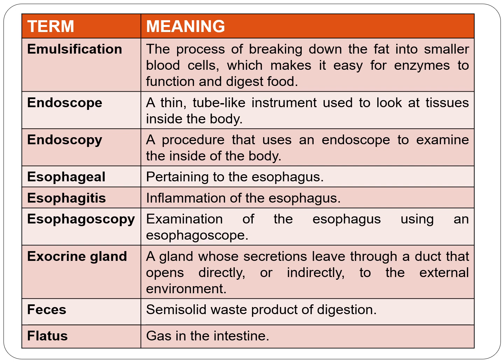The next term is esophageal — pertaining to the esophagus. Next is esophagitis — inflammation of the esophagus. Esophagoscopy is examination of the esophagus using an esophagoscope. Next is exocrine gland — a gland whose secretions leave through a duct that opens directly or indirectly to the external environment.